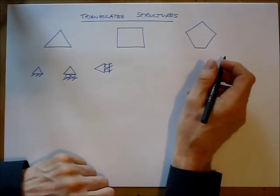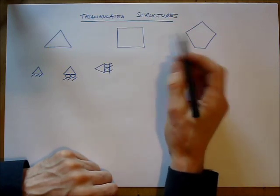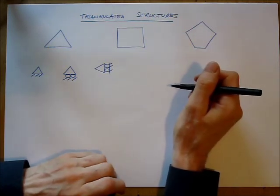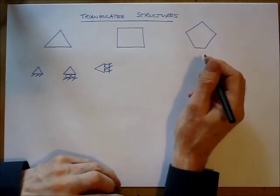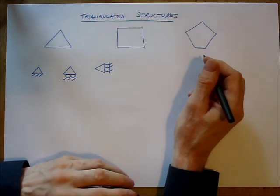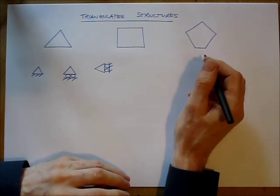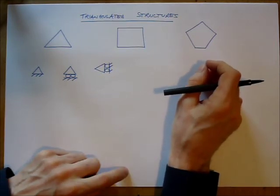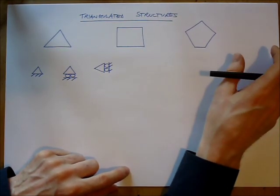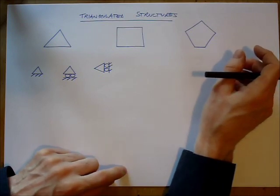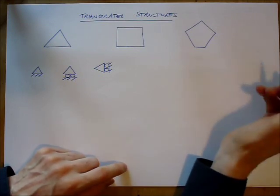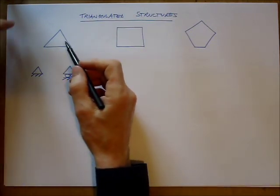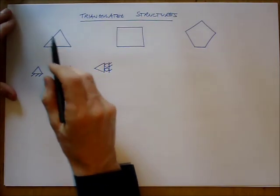Hi, this is a tutorial introducing triangulated structures or pin jointed frames. These are structures that structural engineers make use of as they provide stiff and light structures which can be transported and erected relatively simply. Now let's have a look at the basis of a triangulated structure, you're going to find this hard to believe, is actually a triangle.